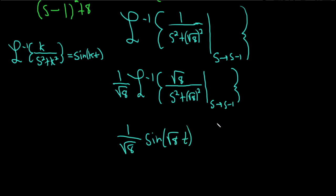But we're not done. We did a shift, and when you do the shift, you get an exponential. Because we shifted from s to s minus 1, we get e to the 1 times t. And then we're done.